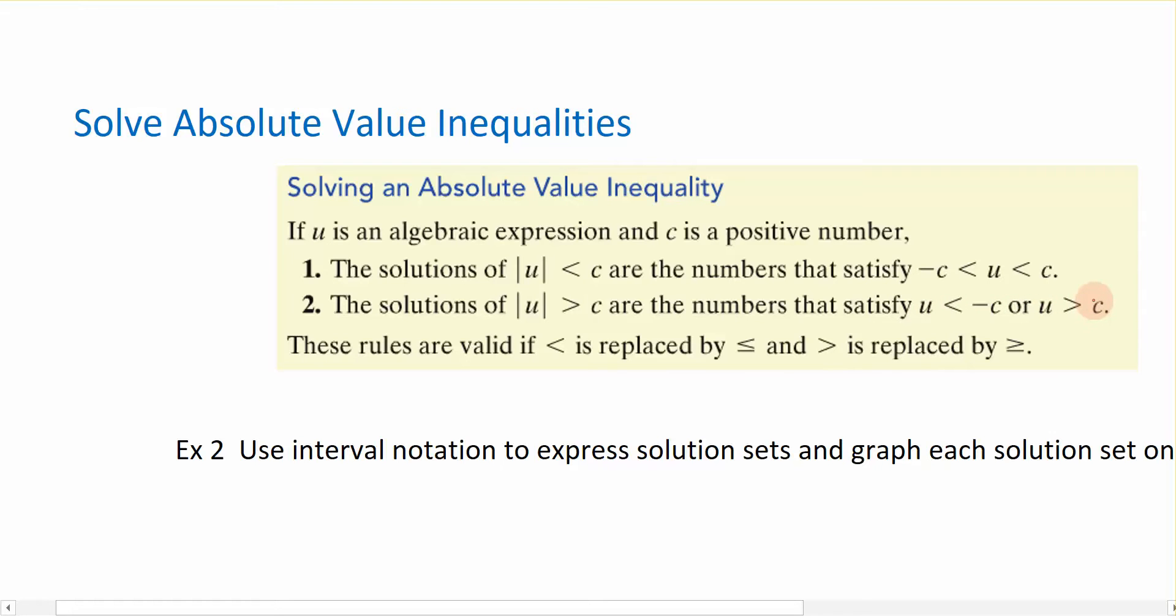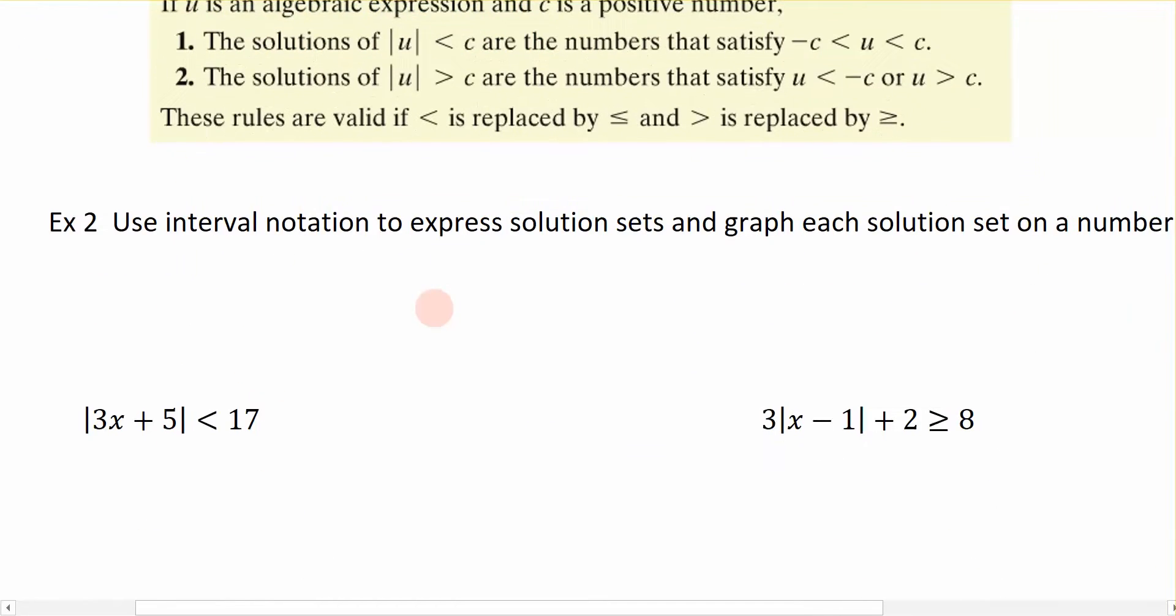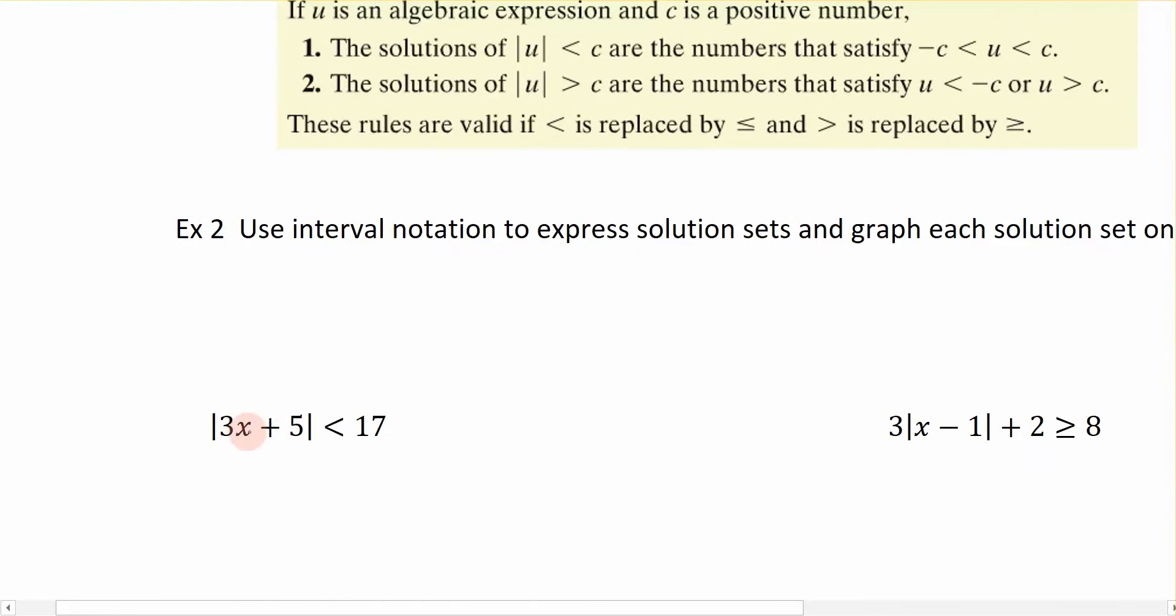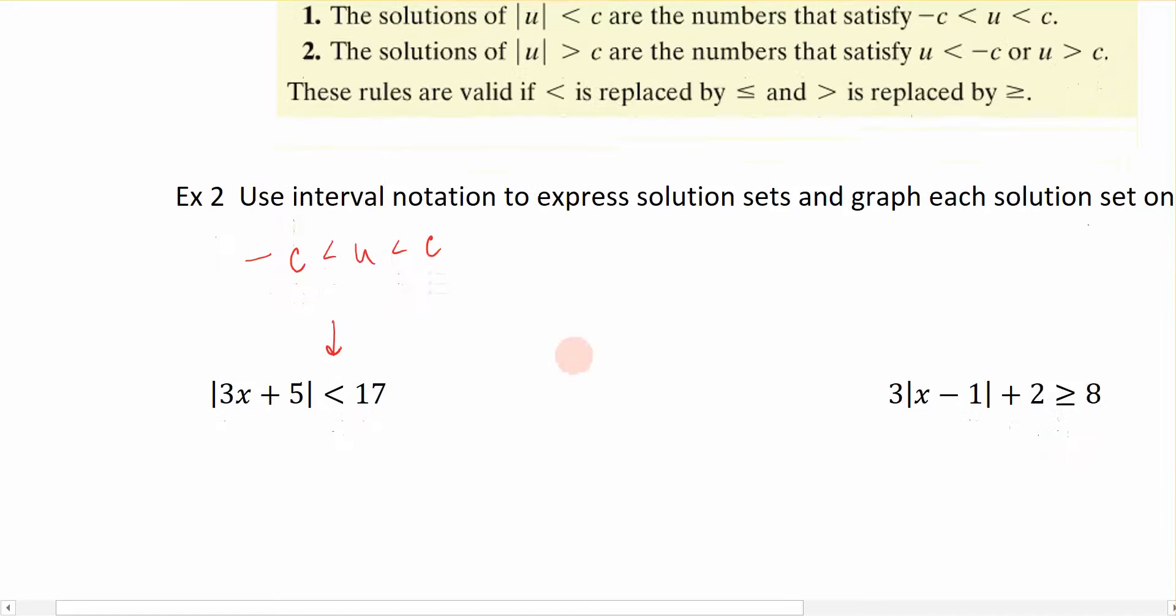So we're just going to see which pattern we have to begin with. Here, I have the absolute value of 3x plus 5 less than 17. Because it is a less than symbol, we are looking at the first scenario right here, where we have the negative c greater than u, less than positive c.